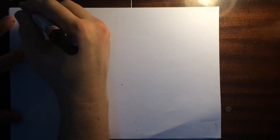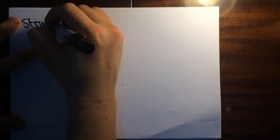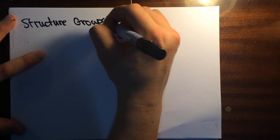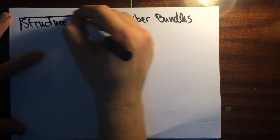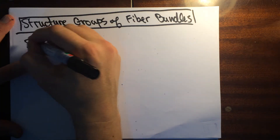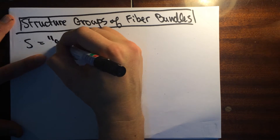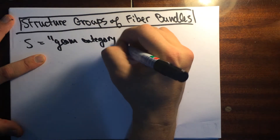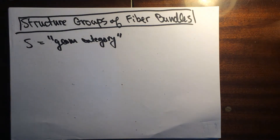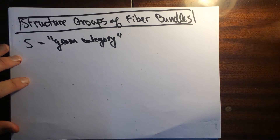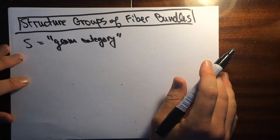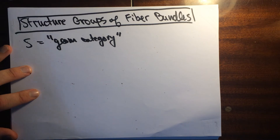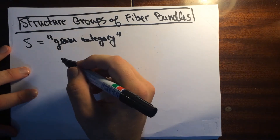I want to talk about structure groups of fiber bundles. S is going to be some geometric category — I'm really thinking of schemes when I do all this. We've talked about trivializations and trivializing atlases, so now let's talk about structure groups.